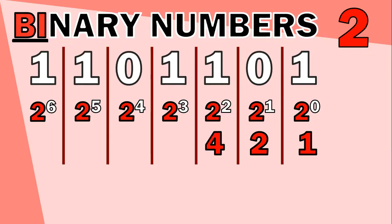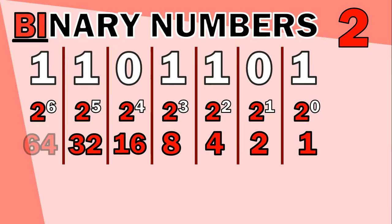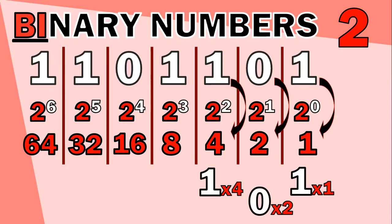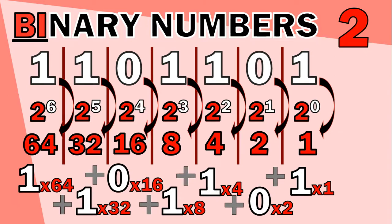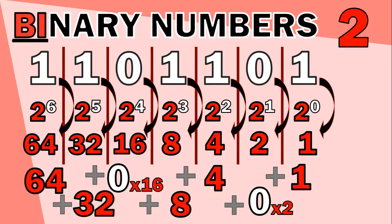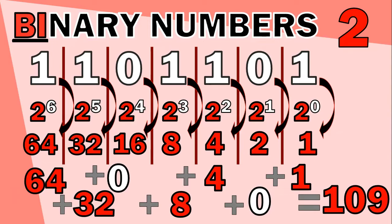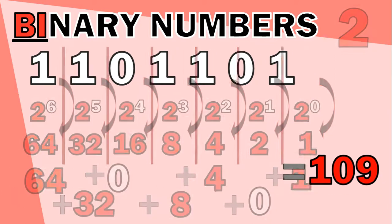The fourth column is 2³ = 8, and to find the next column value you simply double the previous one. Applying the same strategy as with decimal: take each digit multiplied by its column value — 1×1, 0×2, 1×4, and so on — then add the products together. Columns with a 1 simply contribute that column's value; columns with a 0 contribute nothing, since 0 times any number is 0. Adding the results: 1 + 4 + 8 + 32 + 64 = 109. So 1101101 in binary equals 109 in decimal.